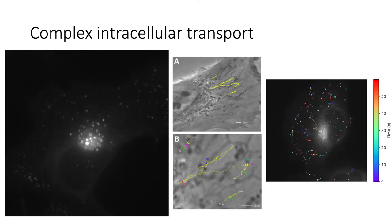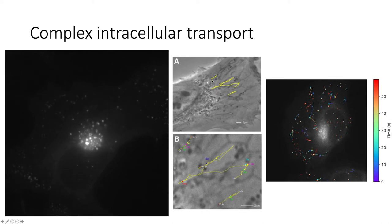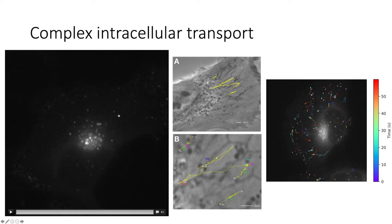Here are some example trajectories of real intracellular Rab5 endosomes moving in the cell. Each of these dots exhibits a variety of complex behaviours — they stop and start, they wiggle about, and they change direction. The stills and the video show that we can't assume each of these trajectories has a single anomalous exponent. We have to assume that at every single point in each trajectory there is a different behaviour being exhibited — and that's precisely how we come to the measurement paradox.